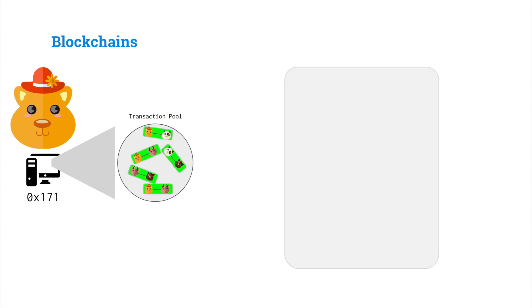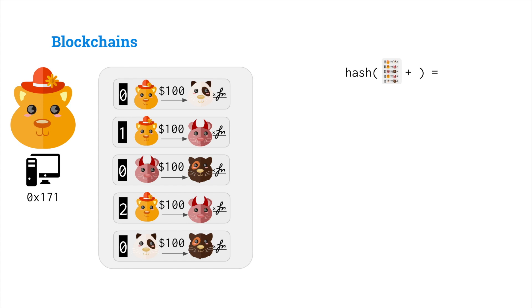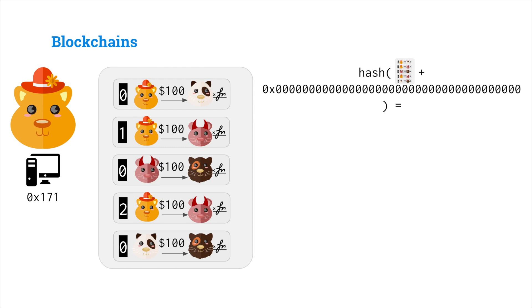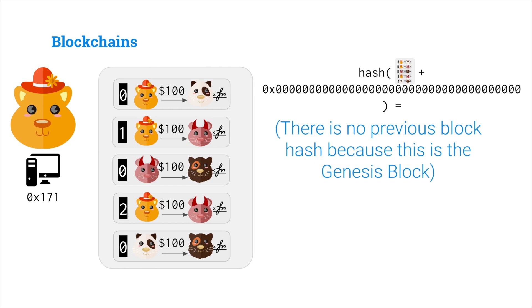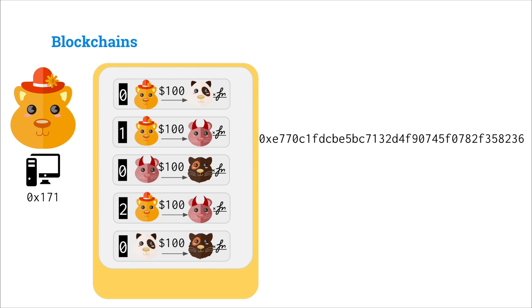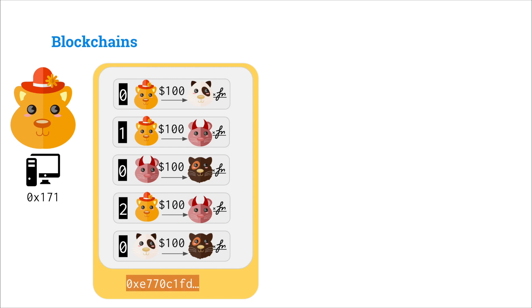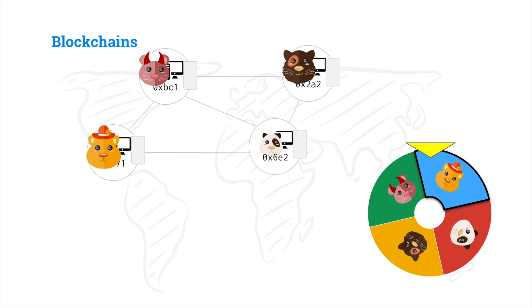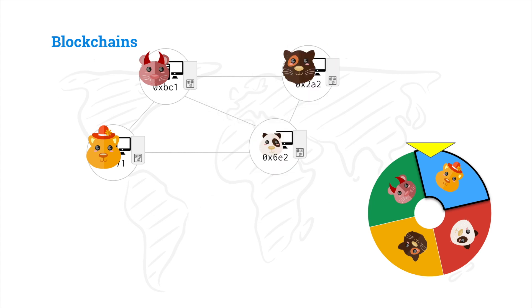Alice goes through her transaction pool, takes her transactions and adds them to a block. Alice will hash that block, but instead of just signing the hash of the transactions, Alice will hash the transactions together with the previous block hash. This previous block hash is just a bunch of zeros because this is the first block — the genesis block — and there is no previous block. Now Alice will hash those two together to get the block hash of the first block. She'll add that block hash to the block and sign it as the authority for this first round. Note that there is no ordering nonce; the ordering is just implicit in which previous block hash was used. Alice will add this block to history and send it to everyone, and everyone will verify the block and add it to their ledger.